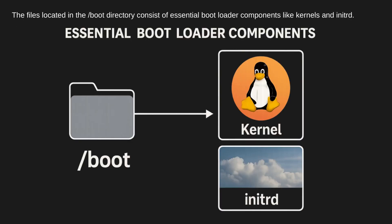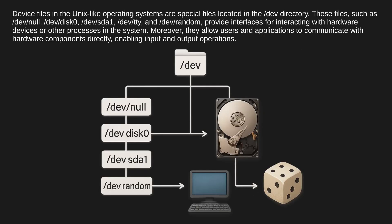The files located in the /boot directory consist of essential bootloader components like kernels and initrd. Device files in Unix-like operating systems are special files located in the /dev directory. These files, such as /dev/null, /dev/disk0, /dev/sda1, /dev/tty, and /dev/random, provide interfaces for interacting with hardware devices or other processes in the system.